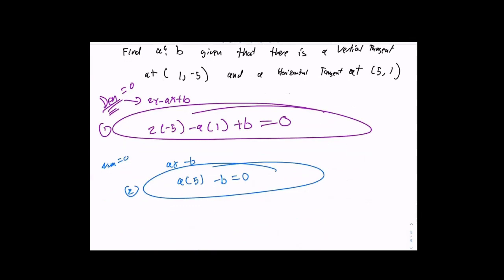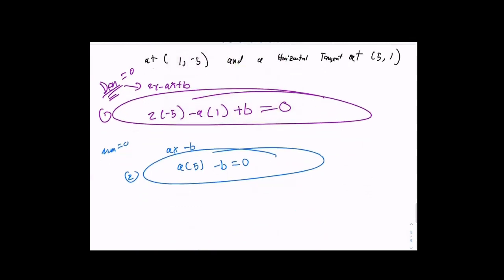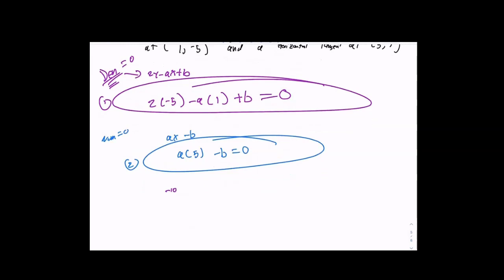Cleaning up: equation 1 is -a + b = 10, and equation 2 is 5a - b = 0. Now it's purely algebra — a system of equations. You can use substitution or elimination. The elimination method works nicely here since we have +b and -b already aligned.